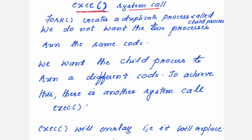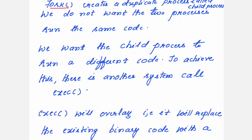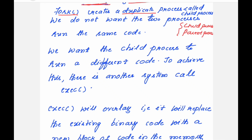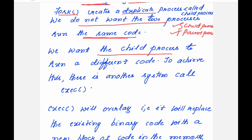What is the job of the EXEC system call? Fork, which we have already seen, creates a duplicate process called the child process, while the process which created it becomes the parent process. Both run concurrently. We do not want these two processes to run the same code — we want the child process to run a different code. To achieve this, we have another system call called EXEC.